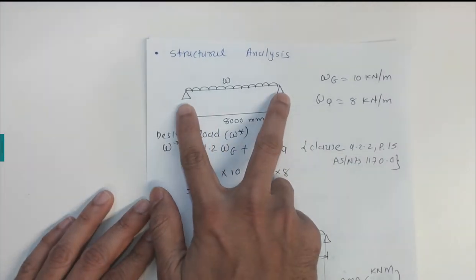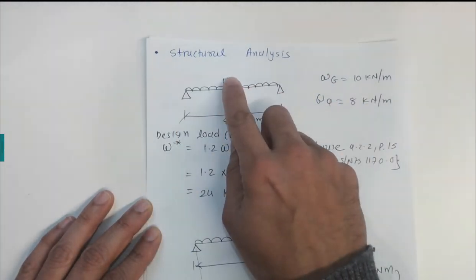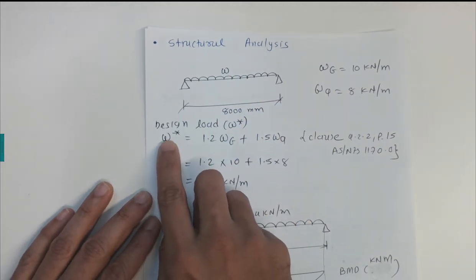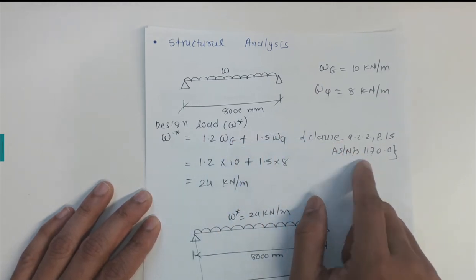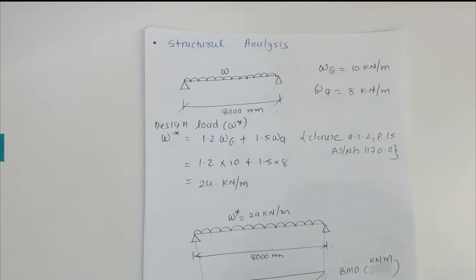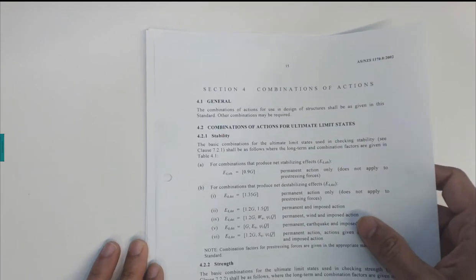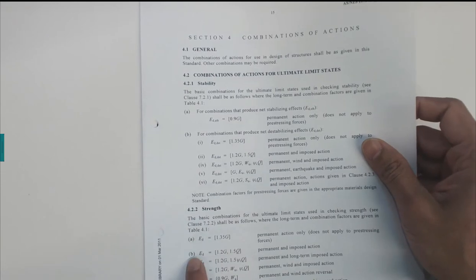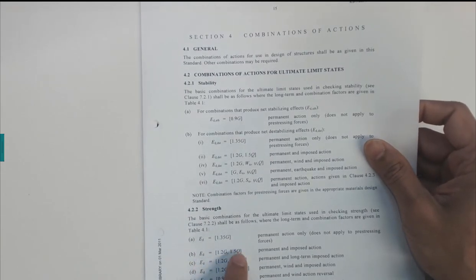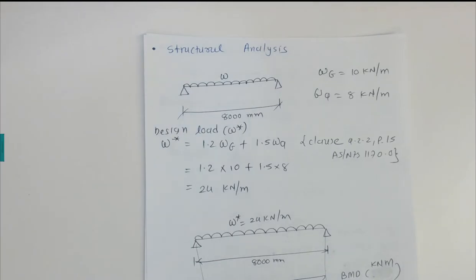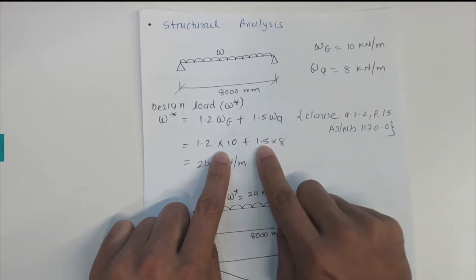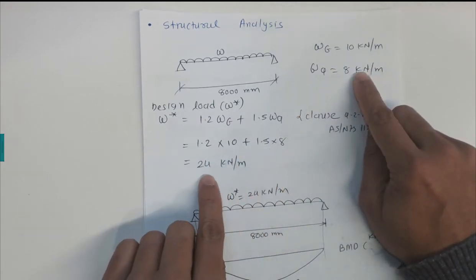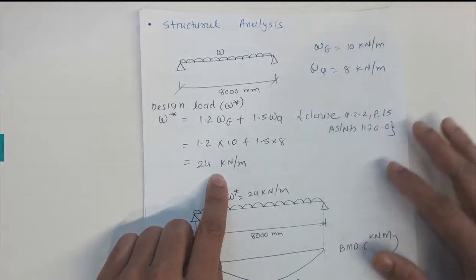We combine the dead load and live load using the load combination equations. Going to AS 1170.0, on page 15, under the strength criteria, the design load is 1.2G plus 1.5Q. Substituting: 1.2 × 10 + 1.5 × 8 gives us a design load W* of 24 kilo-Newtons per meter.